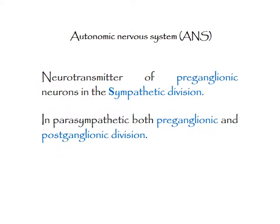In the autonomic system, acetylcholine controls a number of functions by acting on preganglionic neurons in the sympathetic division. In parasympathetic division, both preganglionic and postganglionic neurons secrete acetylcholine.